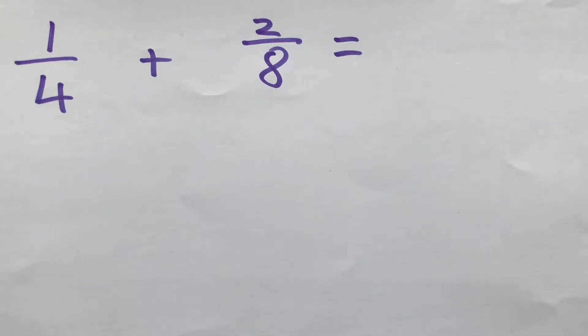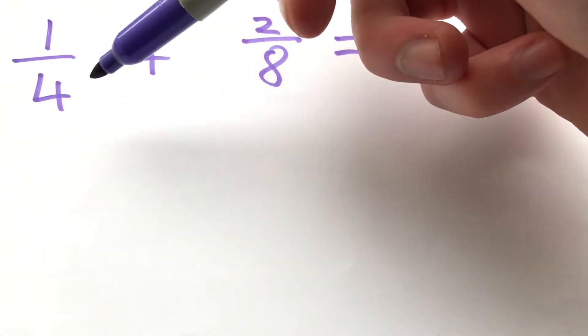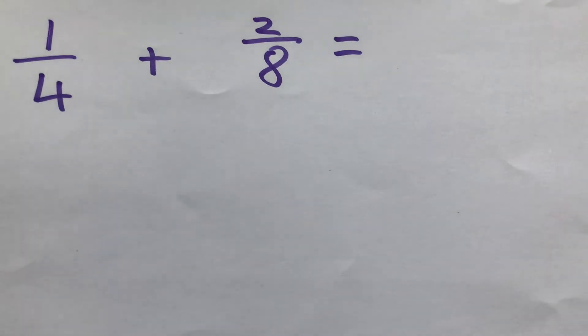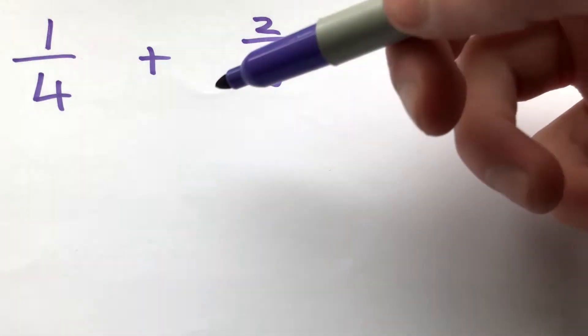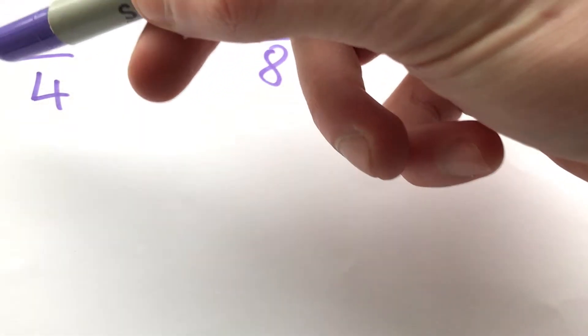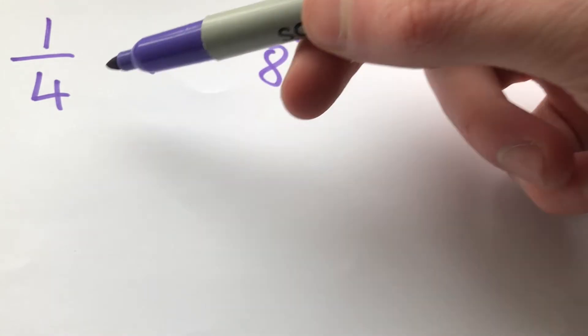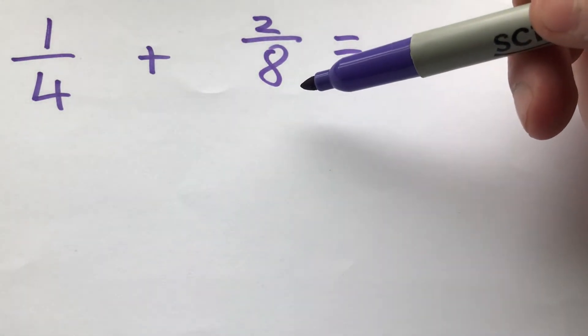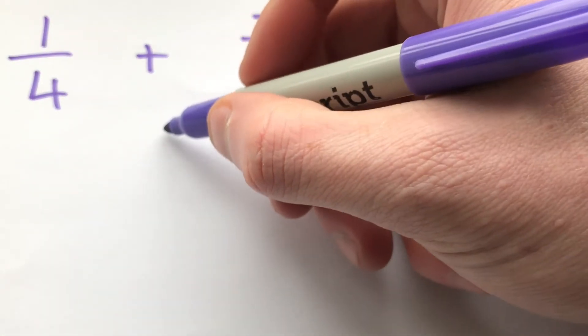So what do we do if our denominators aren't the same? In this case, we have quarters and we have eighths. We have one quarter plus two eighths. But what we need to do is we need to convert these denominators so that they have the same on both sides. And in order to do that, I could multiply this number, both the top and the bottom, by two. So we end up with eighths at the bottom. So if I was to do that, one quarter, both of them multiplied by two, equals two eighths.